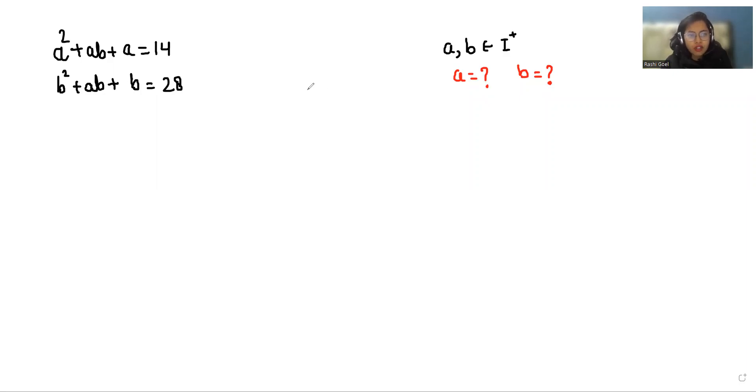My name is Rashi Goyal and in this video we are going to solve a² + ab + a = 14, b² + ab + b = 28, where a and b belongs to positive integers and we have to find the value of a and b.